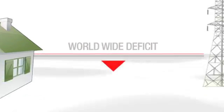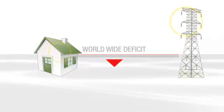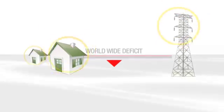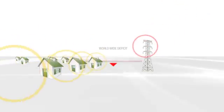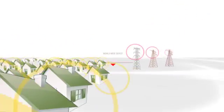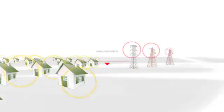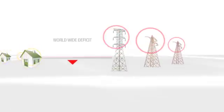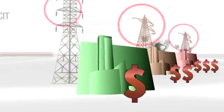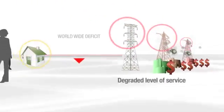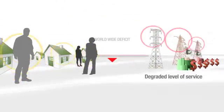There is a continuous worldwide deficit of electrical power generation and available power distribution infrastructure. At the same time, the demand for power is ever increasing. This widening gap between demand and available power forces power companies to have increased operating costs and a degraded level of service, both of which directly impact consumers.